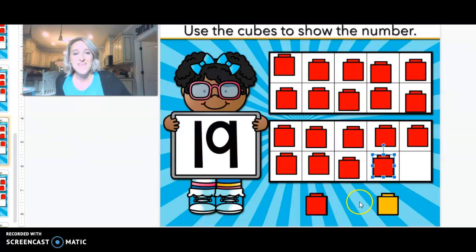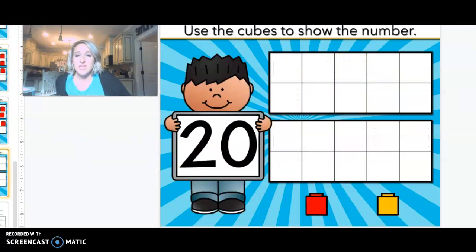This is what 19 blocks looks like. Alright boys and girls, last one. We're just going to go ahead and talk about 20 because we're there. 20 is a 2 and a 0. So let's count to 20. Ready?